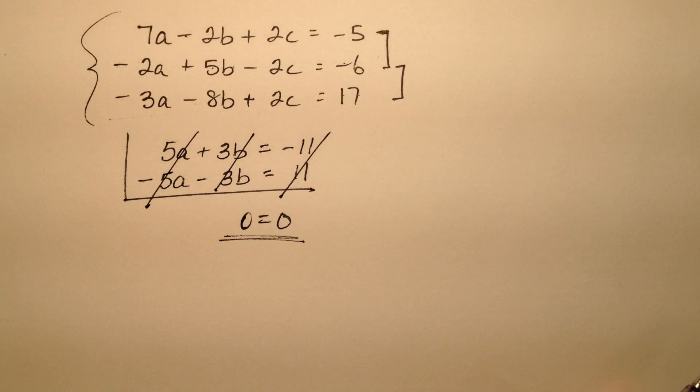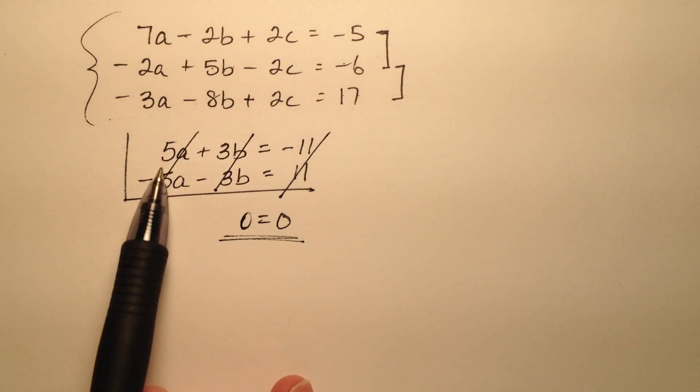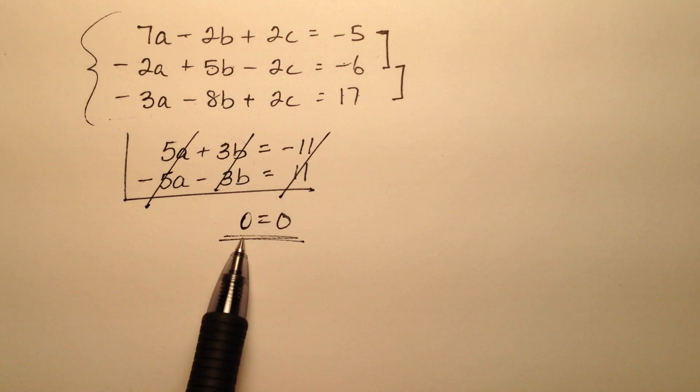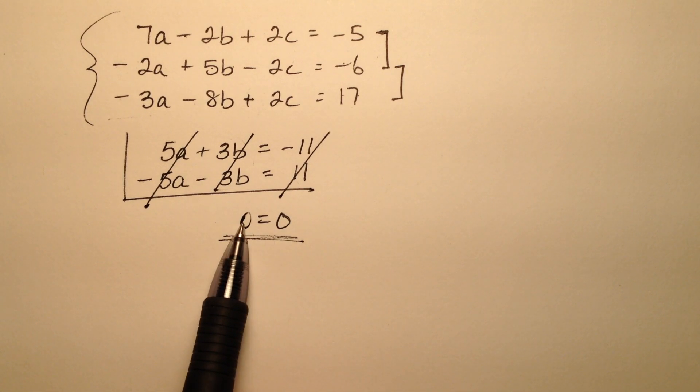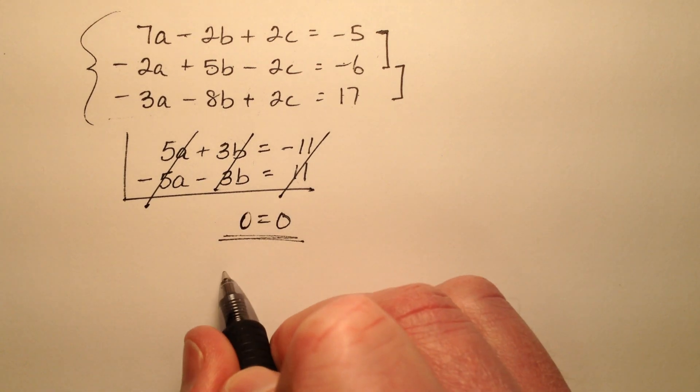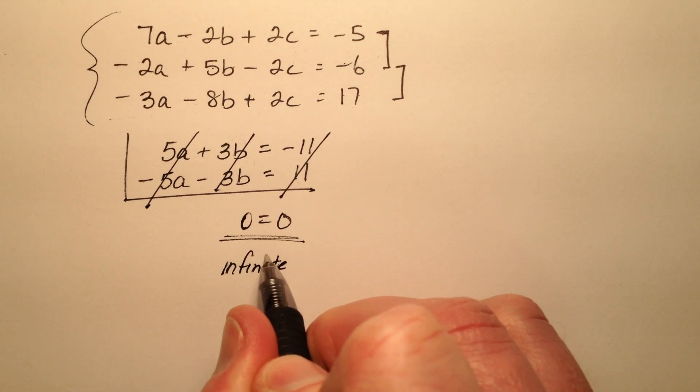So I know that from past experience, whenever all my variables cancel out and I'm left with a true statement like this 0 equals 0, I know that this system will have infinite solutions.